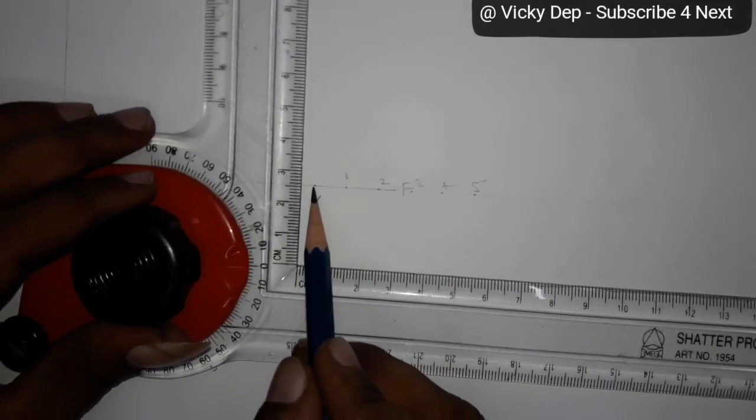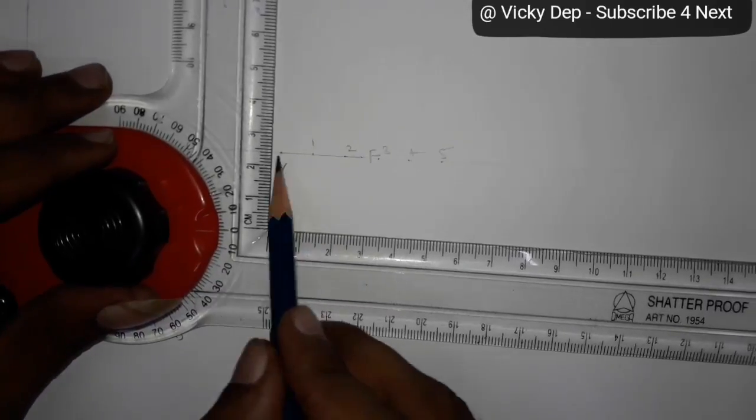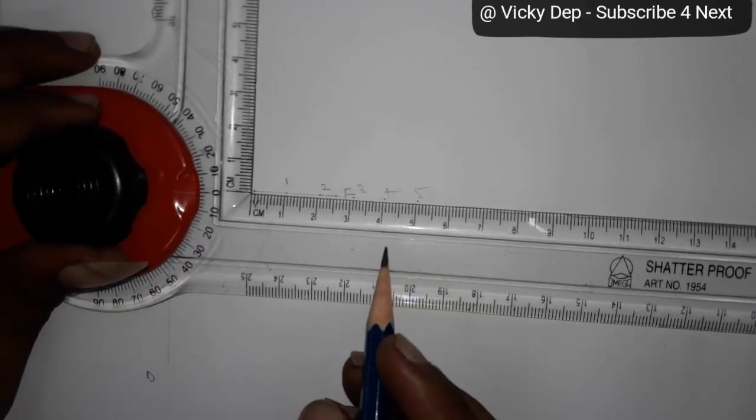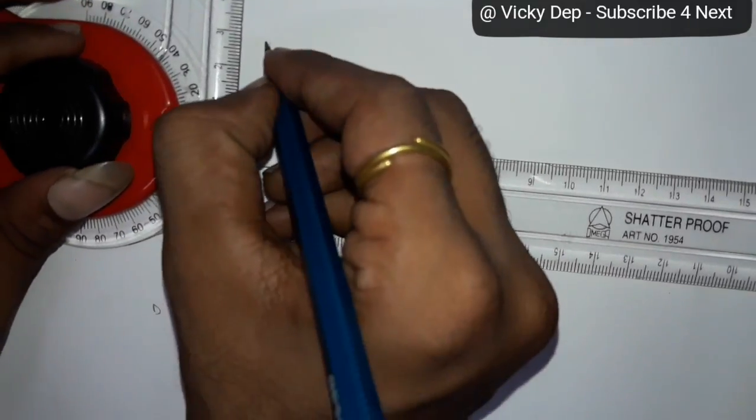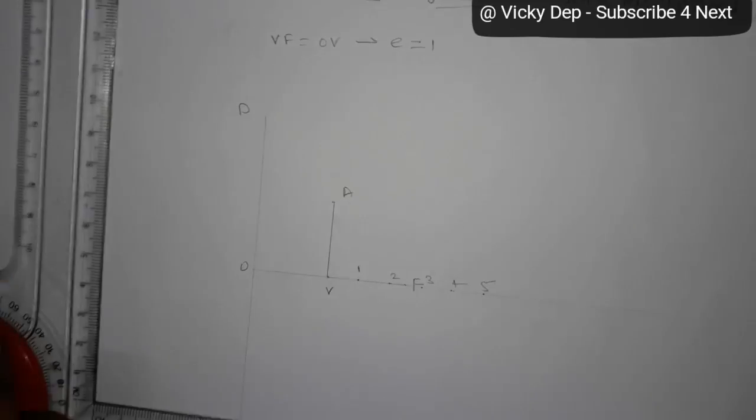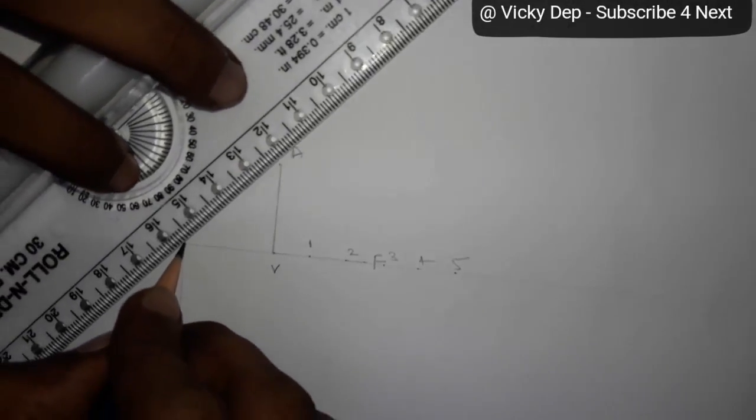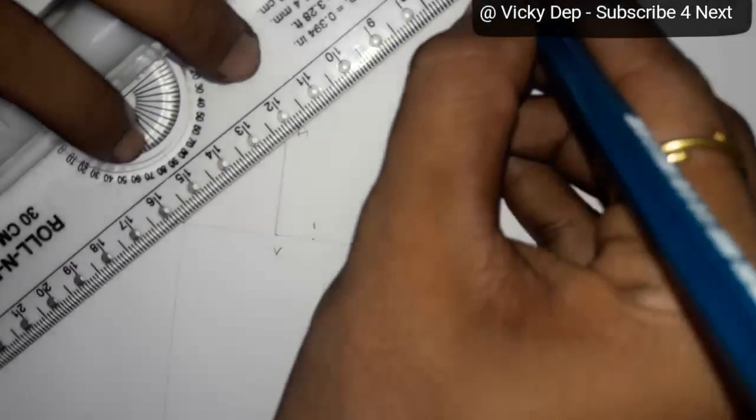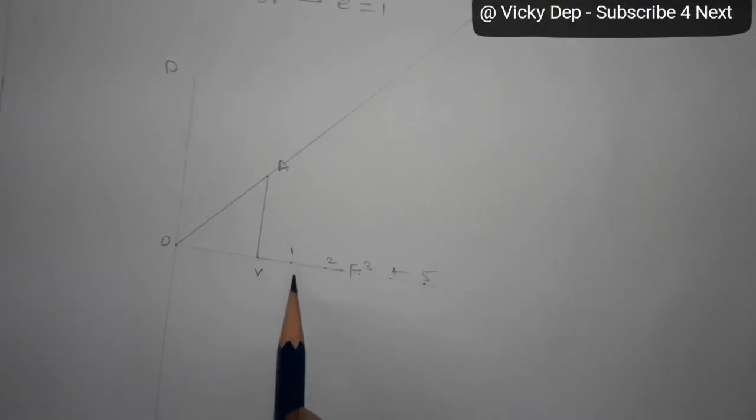As you have to take a vertical line from V in equal distance from VF, that is 25, give some name A. From this line, from this O to A, pass one line, straight line. This is a very important line, on this line you have to project all these points.